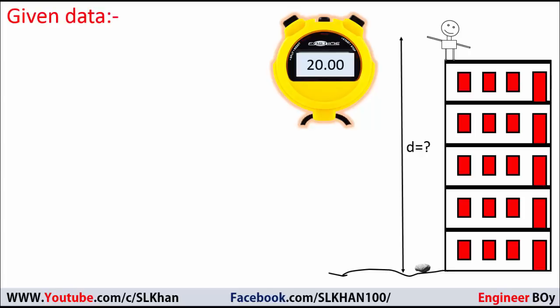So we have some given data now. Time which is 20 seconds, gravity on the stone which is 9.81 meters per second squared, and remember one thing, the stone was in rest at the start of dropping so the initial velocity of the stone must be zero meters per second.